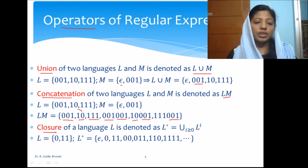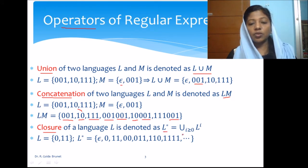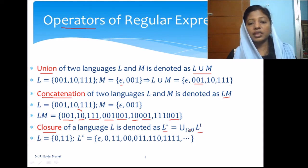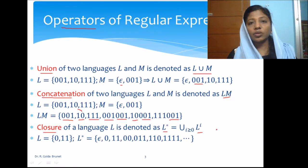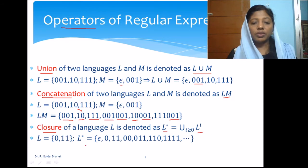The next operation is closure. Closure of a language is denoted by L*, which is the union of concatenations of the language, indicated by L^i where i goes from 0 to infinity — any number greater than or equal to 0. So it starts from 0 and goes up to infinity: L^0 union L^1 union L^2, and so on.